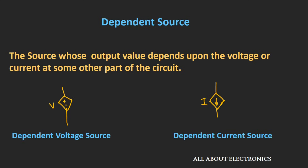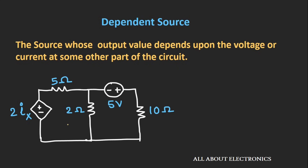The dependent voltage source is represented by this symbol and the dependent current source is represented by this symbol. Whenever you see these kinds of symbols, it means that the circuit contains dependent sources. Now let's understand these dependent sources through one example.